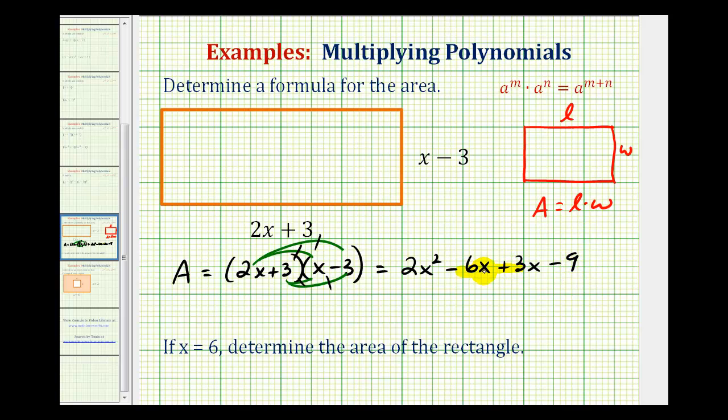Then we do have two like terms here. So the area formula is going to be equal to 2x squared. Negative 6x plus 3x is going to be negative 3x or minus 3x minus 9.